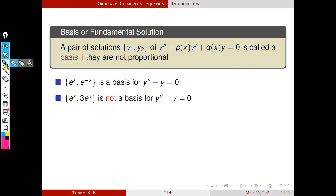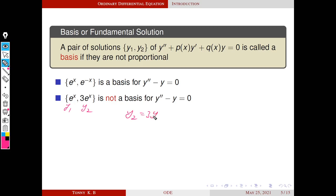What about the pair {e raised to x, 3 e raised to x}? Is it a basis? No. They are both solutions, but they are not a basis because they are proportional — one is a scalar multiple of the other. Clearly y2 equals 3 times y1, or y1 equals (1/3) times y2. One is a multiple of the other, so they are proportional and therefore not a basis.